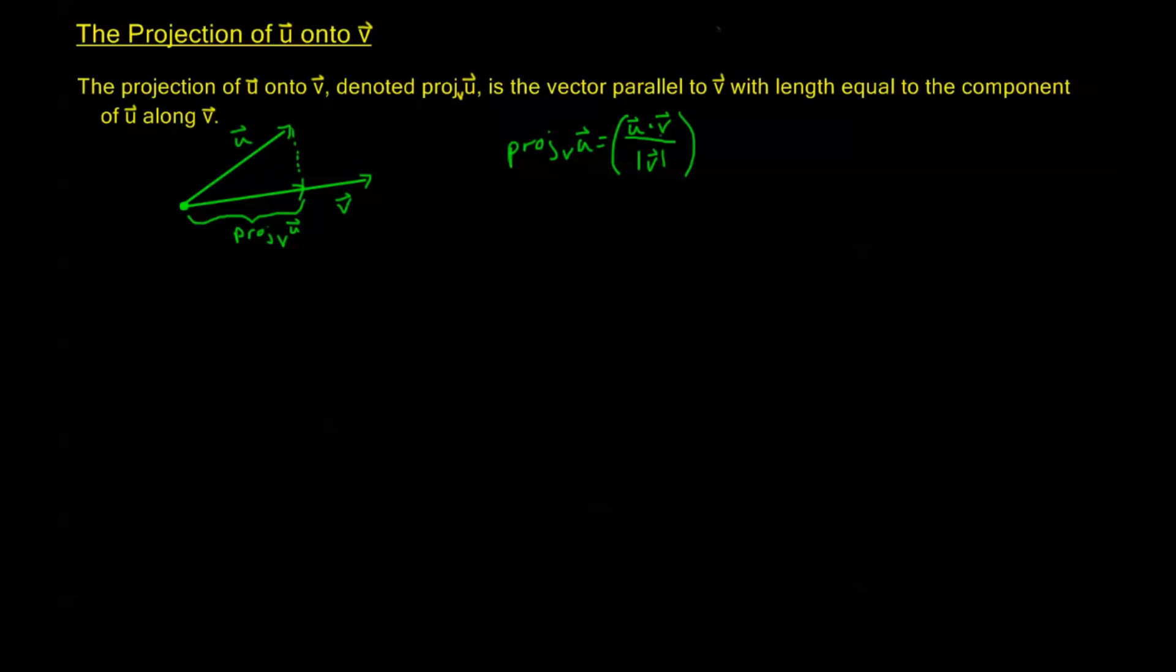Now we need to multiply this. This is just a scalar that gives us the component of u along v or the magnitude of the projection. To make this a vector instead of just a scalar, we need to multiply it by a unit vector in the direction of v. So we're going to multiply it by the vector v divided by the magnitude of v. This gives us a unit vector with magnitude 1 but direction still v.